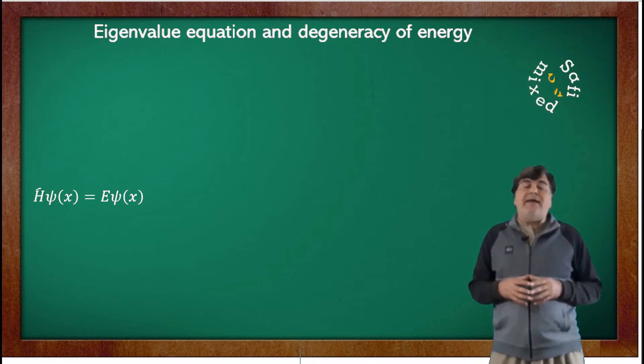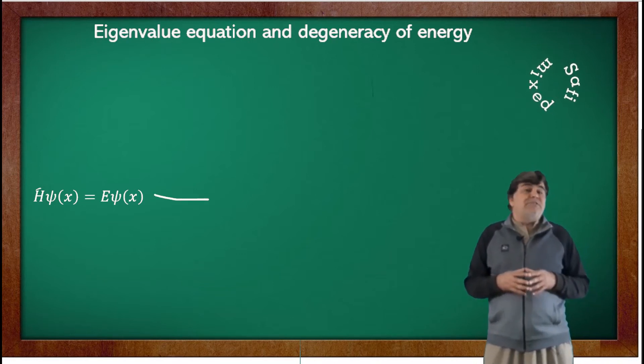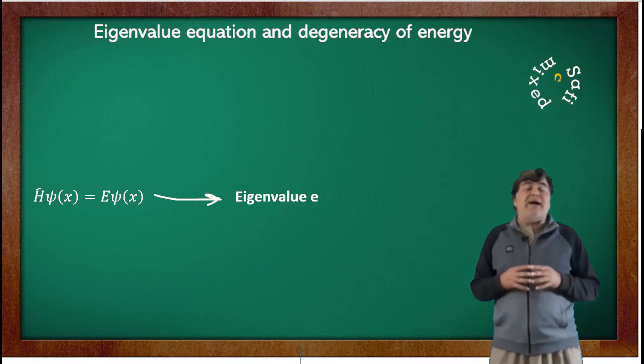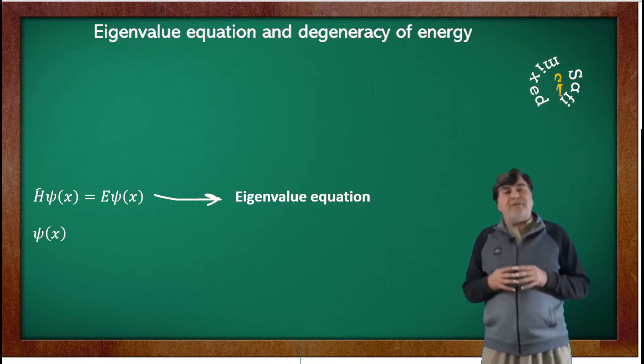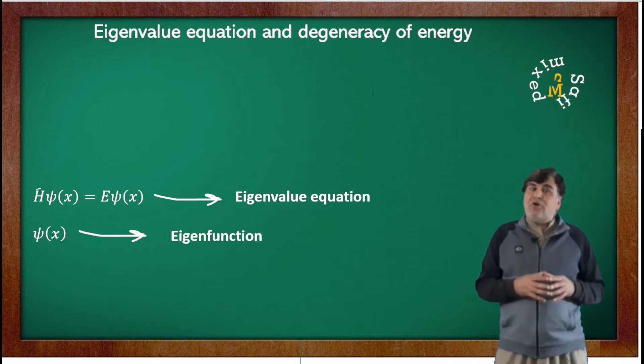The function ψ(x) is called the eigenfunction of the operator Ĥ, and E is called its eigenvalue.